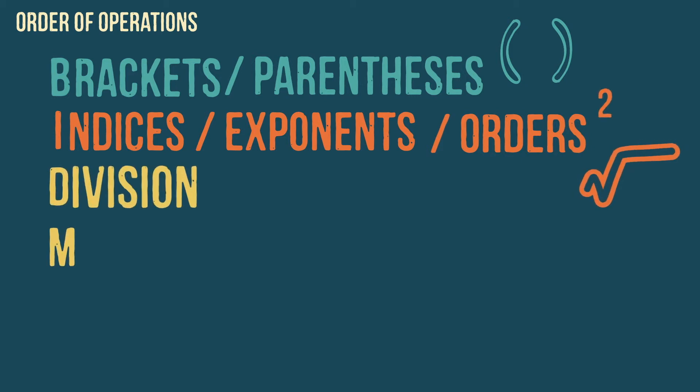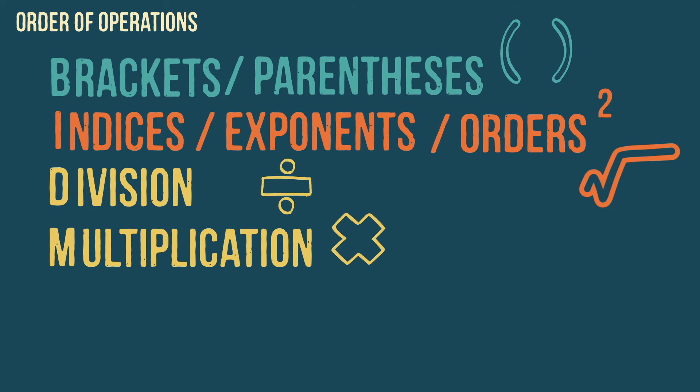D and M stand for division and multiplication and are calculated in the order they appear in the question from left to right. And lastly, A and S stand for addition and subtraction and again these two are calculated in the order they appear.